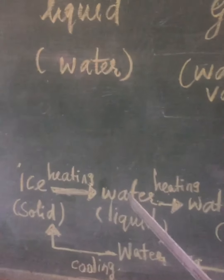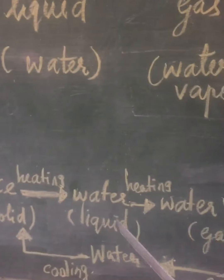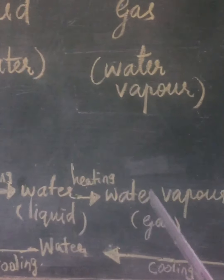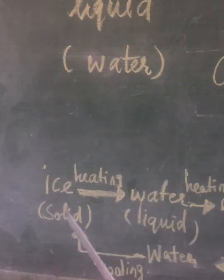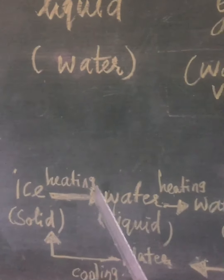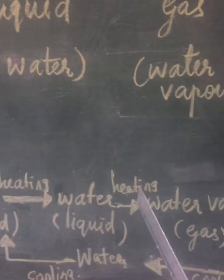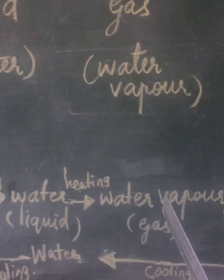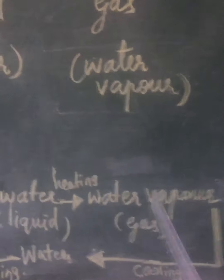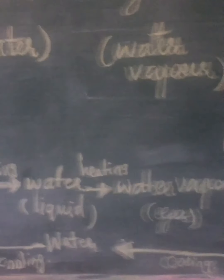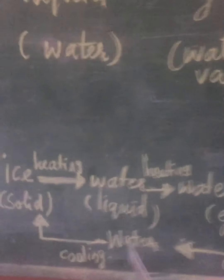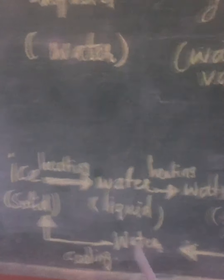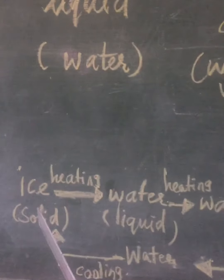When you heat the solid state ice cubes, it can be changed into the liquid state water. When you heat the water again, it can change into water vapor — that is the gaseous form. Due to temperature change, the solid can change into the liquid state and the liquid state can change into the gaseous state. When you cool the water vapor, it can change back into liquid water. When you cool the water again, it can change into ice cubes, which is the solid form.